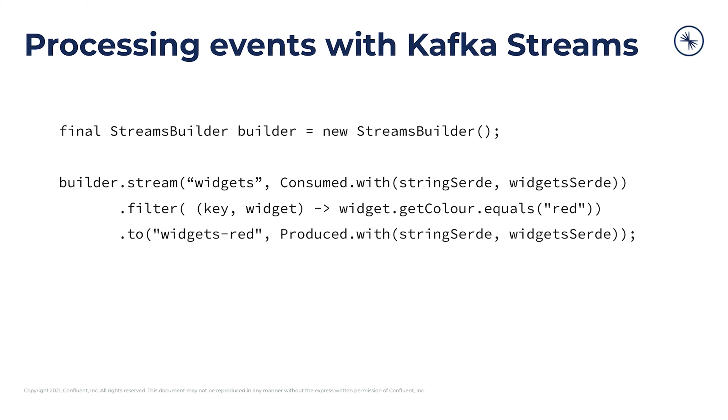One of the main advantages of Kafka Streams over the plain producer and consumer API is that it's declarative, whereas the plain clients API is imperative. In the previous example, we were telling the consumer and producer exactly what to do and how to do it every step of the way. With Kafka Streams, all you do is tell it what you want done to these records — not how — and all of that is taken care of by the Kafka Streams framework.